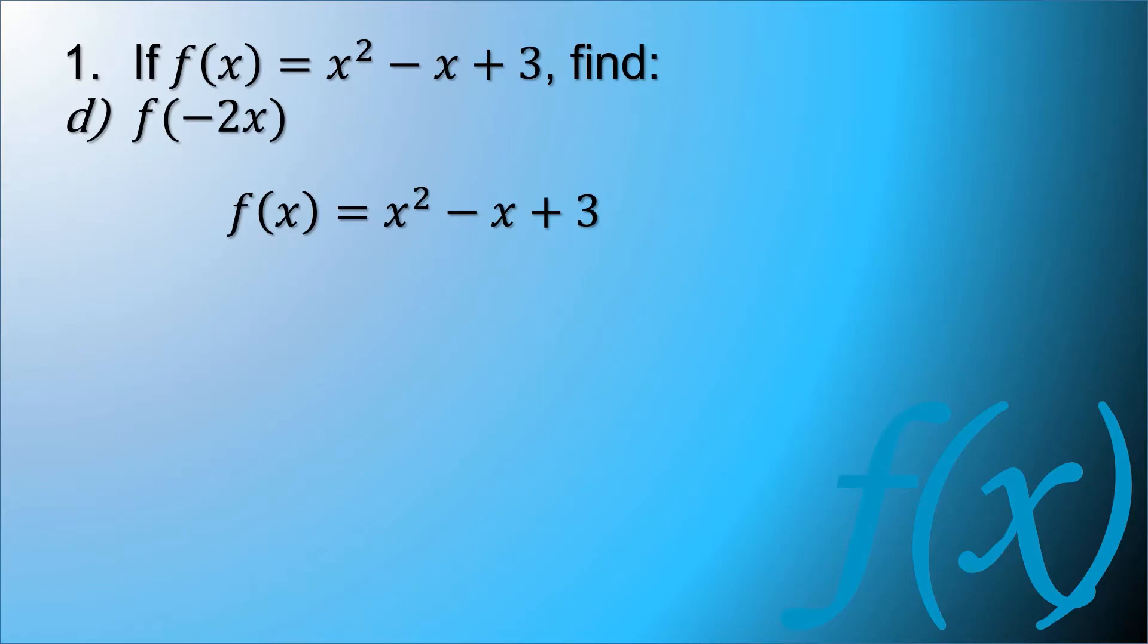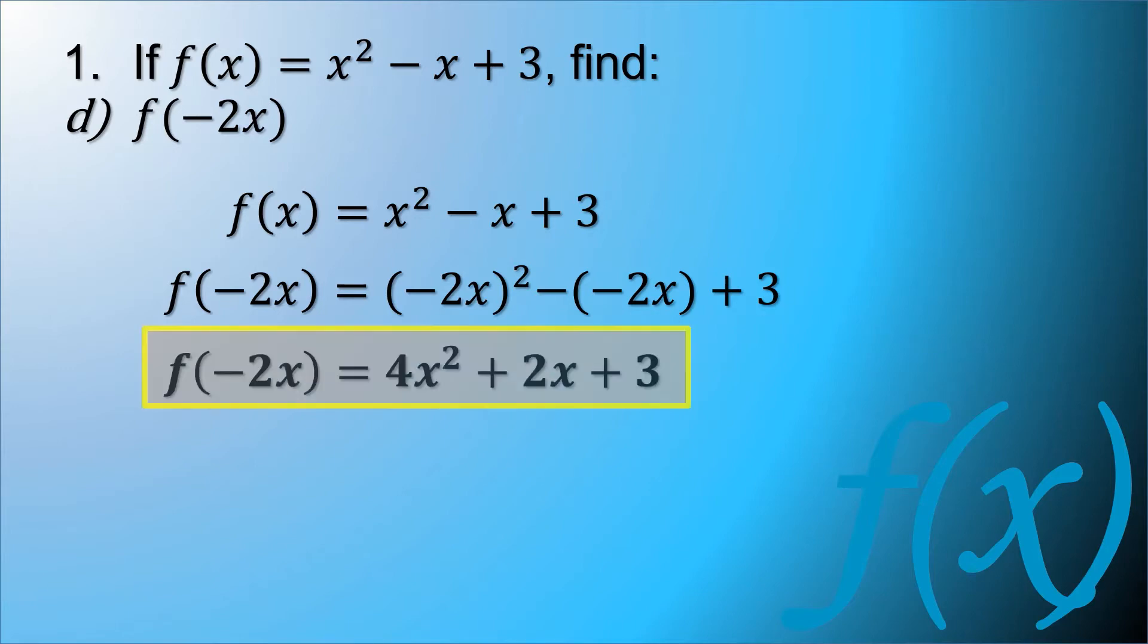Next, function of negative 2x. The same process, function of negative 2x is equal to negative 2x squared minus negative 2x plus 3. Simplifying the equation...